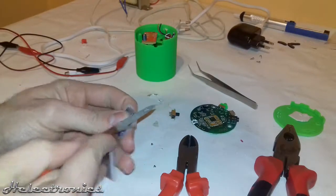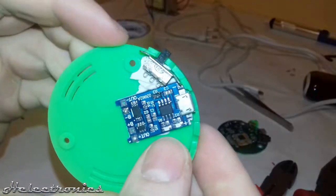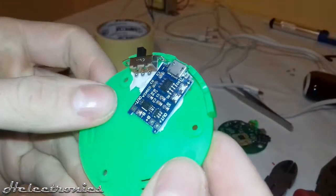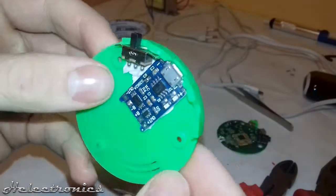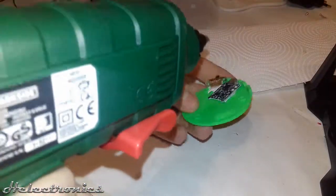Using double-sided adhesive tape I place the circuit and an on-off switch to the backplate. After that using a hot glue gun I fix permanently the components.